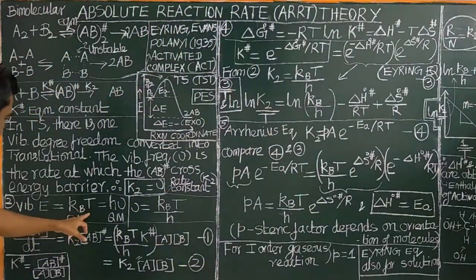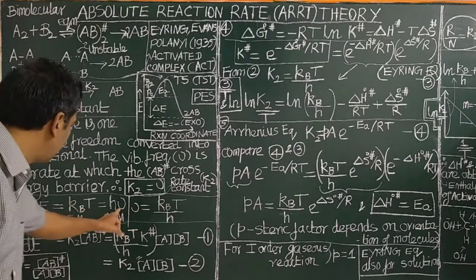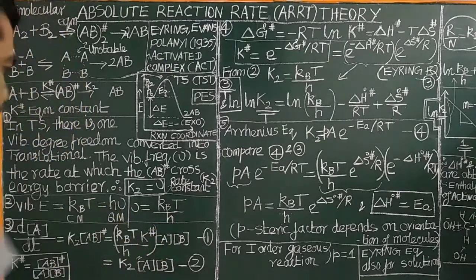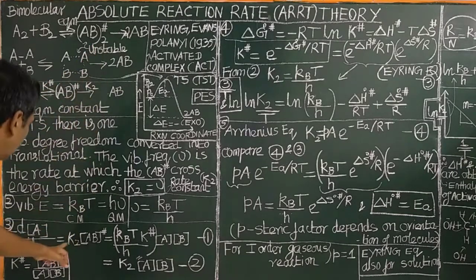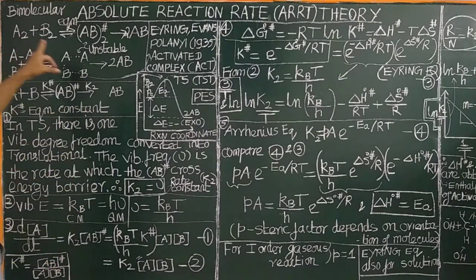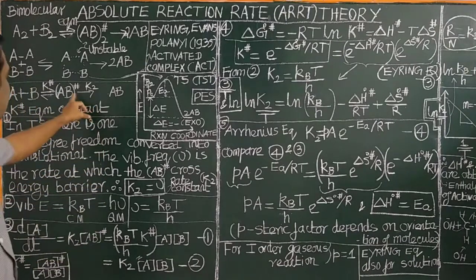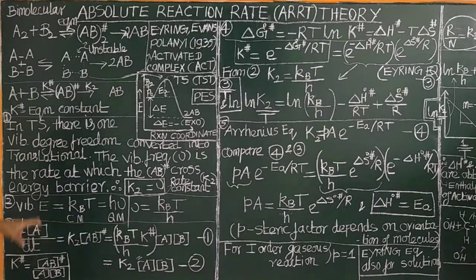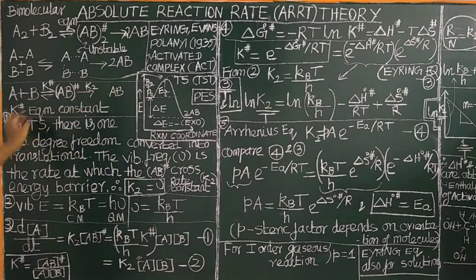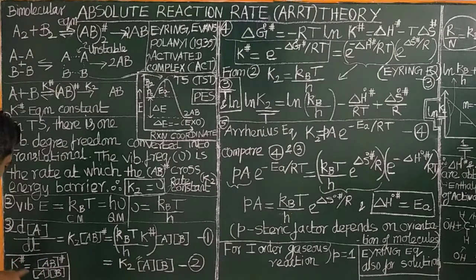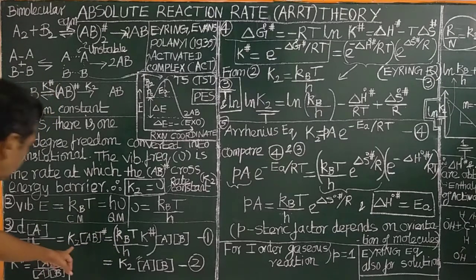The rate of the reaction is equal to K2 times the concentration of the activated complex. By applying the equilibrium, we can obtain the equilibrium constant K‡ equals concentration of AB‡ divided by concentration of A times concentration of B. Therefore, concentration of AB‡ equals K‡ times concentration of A times concentration of B. Substituting this, K2 is obtained.